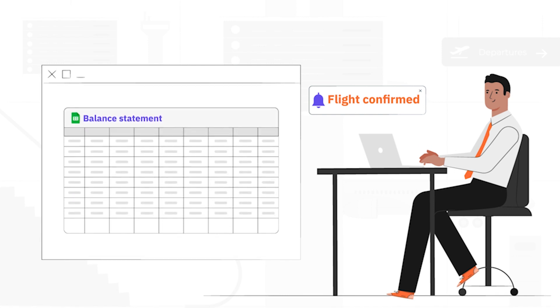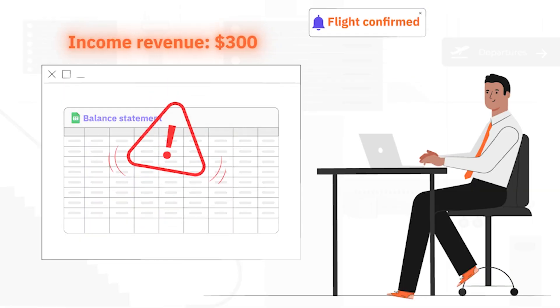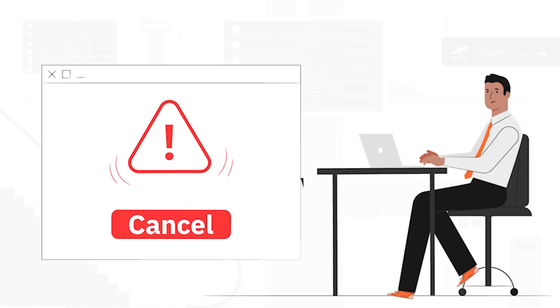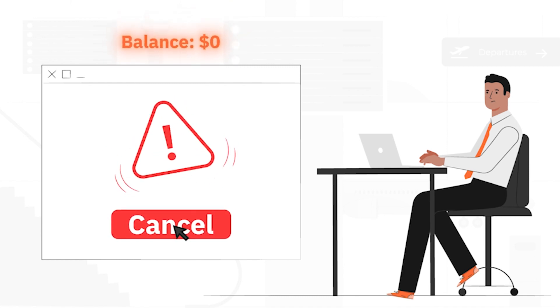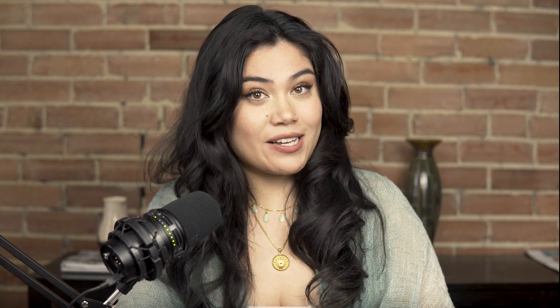This is where it becomes actual revenue. Now let's use another scenario: you have to cancel the flight due to emergency repairs to the plane. In this situation, the customer doesn't get the service they paid for, so you have to send the money back. This is why deferred revenue is considered a liability. Although you have the money, you can only claim it after providing the flight. Until that point, the funds could be returned to the customer.